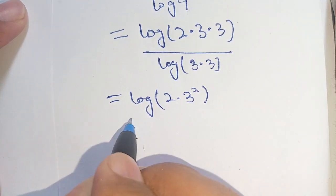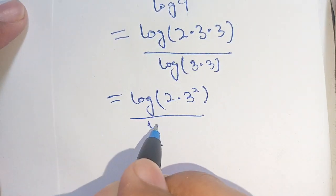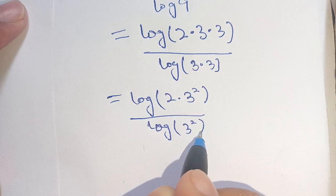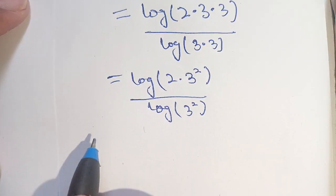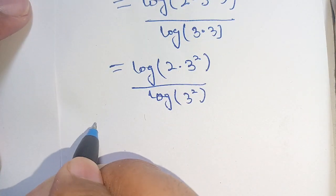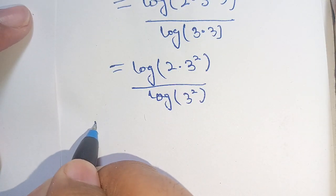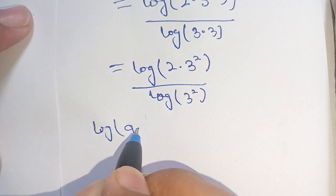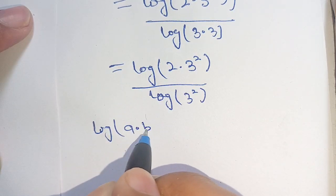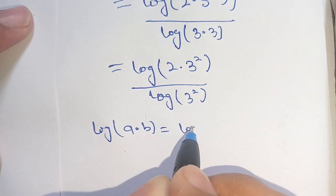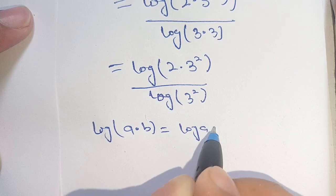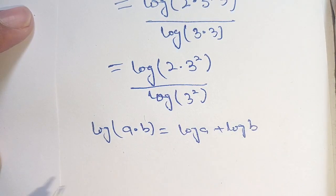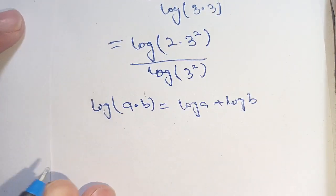We know the logarithm identity that log of a times b is equal to log of a plus log of b. Applying this, we expand log of 2 times 3 squared as log of 2 plus log of 3 squared, divided by log of 3 squared.